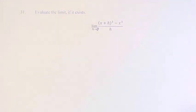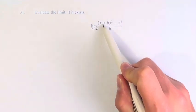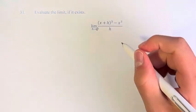Hello and welcome back to another video. In this problem we're asked to evaluate the limit if it exists. We have the limit as h approaches 0 of (x + h)³ - x³ divided by h.